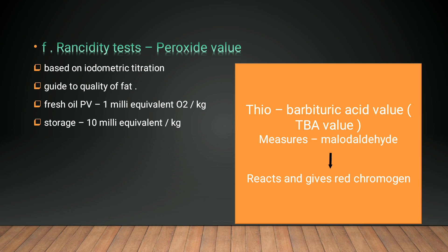A rancidity test can also be done in fishes. It mainly concerns the peroxide value due to fat oxidation, based on iodometric titration. Fresh oil has a peroxide value of 1 mEq oxygen per kg, while storage limit should be 10 mEq per kg. The acidity test is also a quality index method. The thiobarbituric acid (TBA) value measures malonaldehyde in fishes, which reacts to give a red chromogen useful for the quality index method.